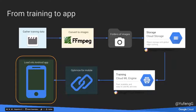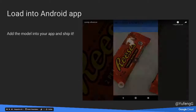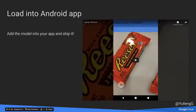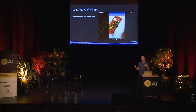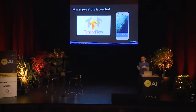So, that's our overall design. We gather data, shoot the videos, slice them up, train and optimize, and then deploy. That's our finished model. And what makes all of this possible is TensorFlow — TensorFlow is Google's machine learning library.